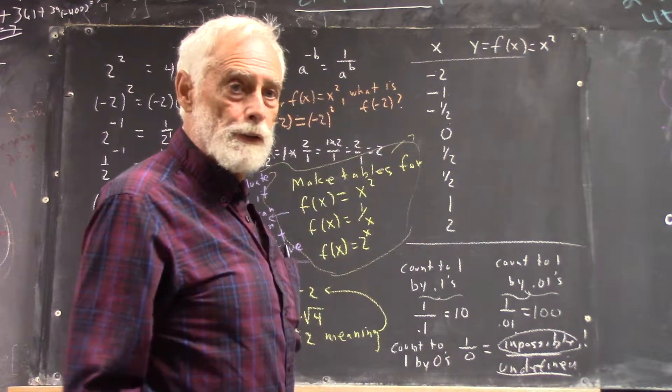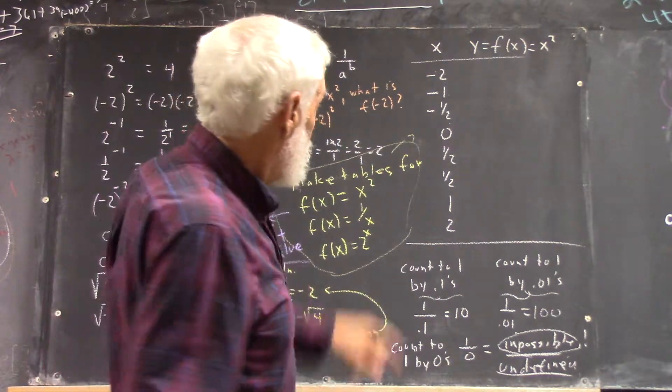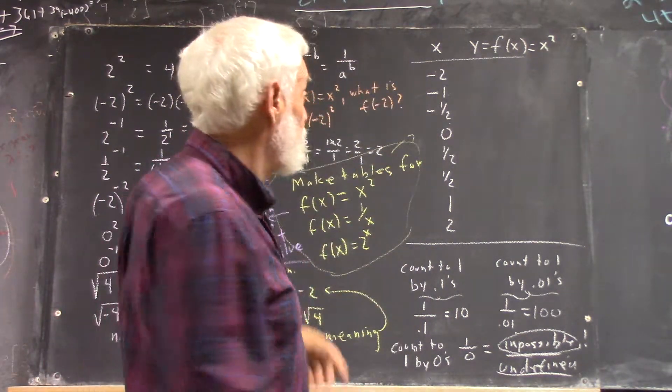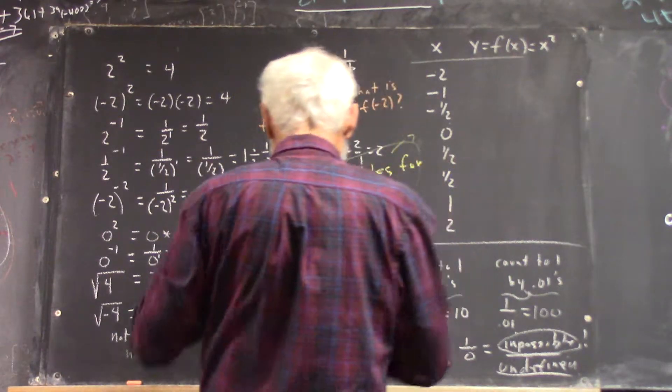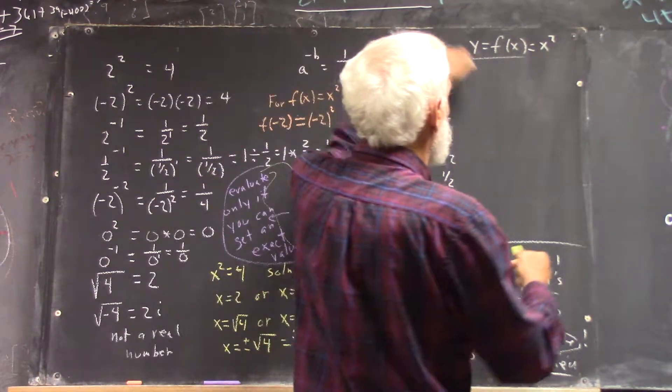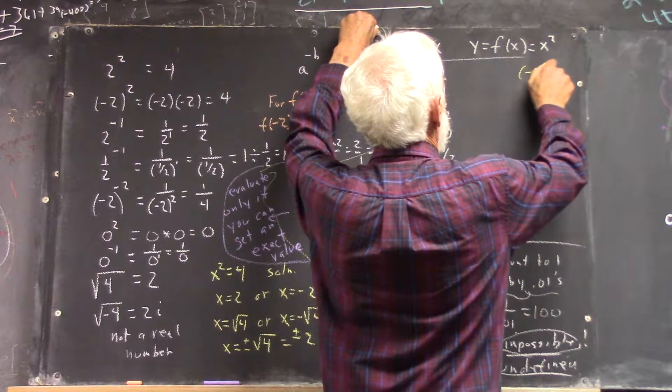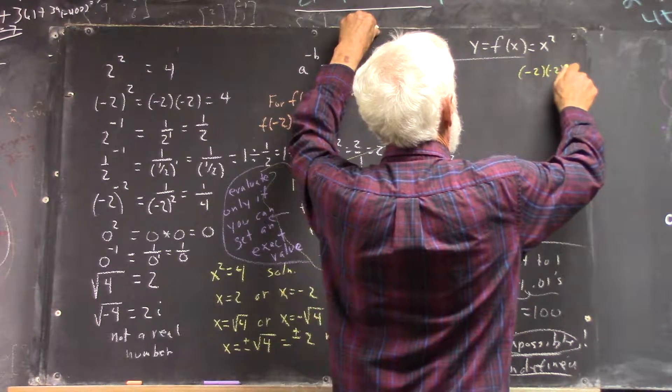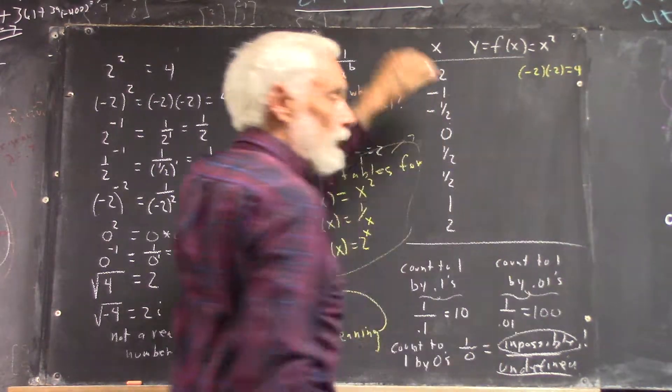So here's going to be the table for x squared. Now negative 2 squared means, well let's see, I'm going to write out the calculation over here, and I'll write the result here.